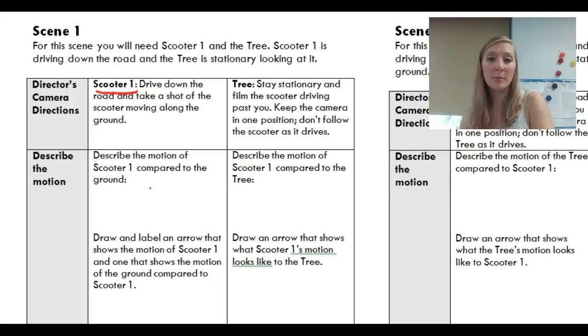Then you're gonna draw an arrow, so we want to do a visual representation to sort of give you kind of another way to think about the data. Then you're gonna look over here where it says tree, and you're going to do the same thing. The tree was this time looking at the scooter going past it, and you took a video clip of that. So watch that video clip and then describe the motion of scooter one compared to the tree, and then draw an arrow that shows that motion.